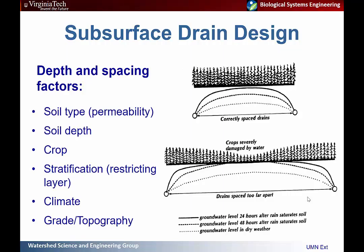The spacing and depth of drains is largely driven by soil permeability — how quickly water can actually reach the drain — so you need to adjust the distance accordingly. Other factors include soil depth, crop type and root zone depth, stratification and restricting layers like clay pans that might affect drain placement, the climate and how large the rain events you're designing for are, as well as drain grade and topography.